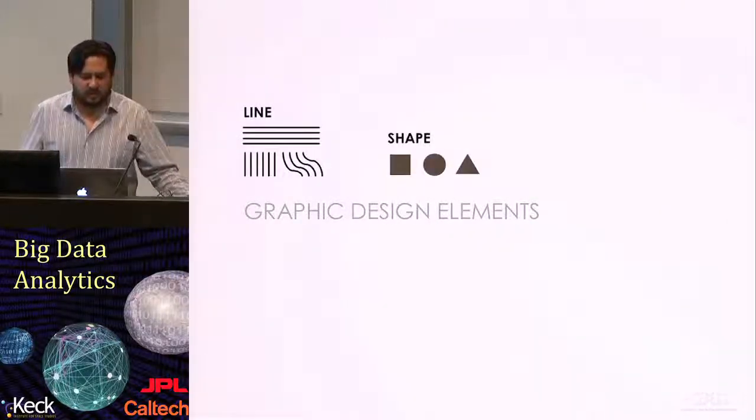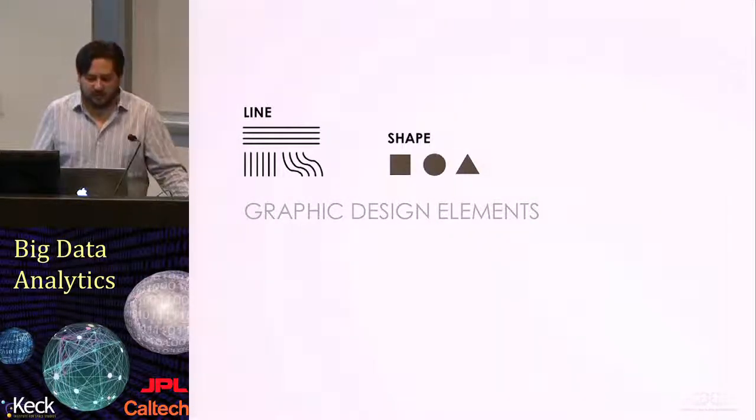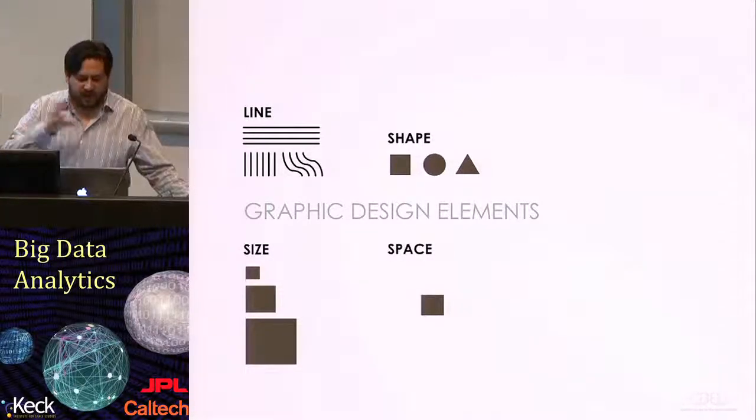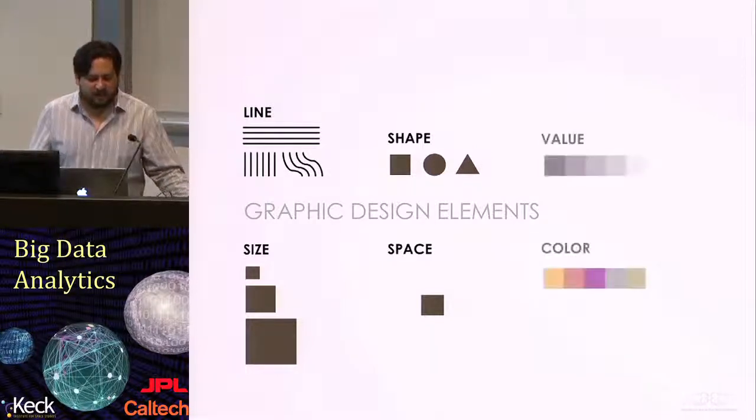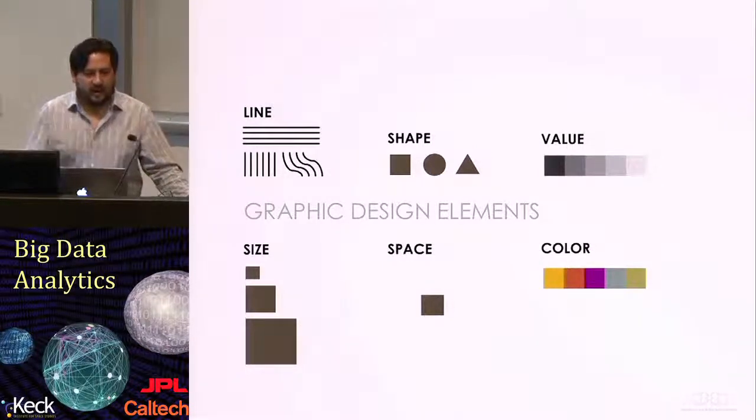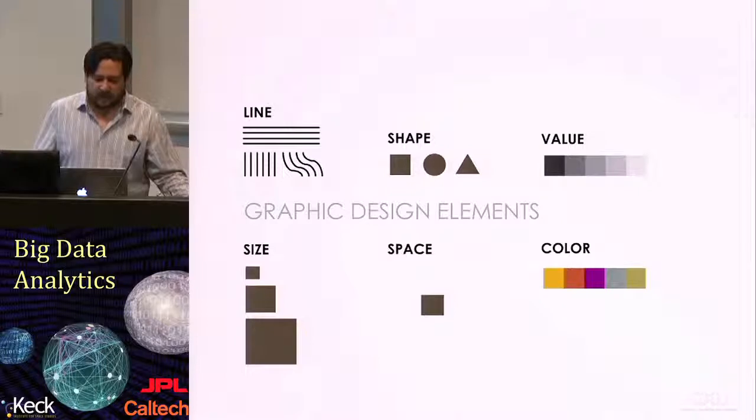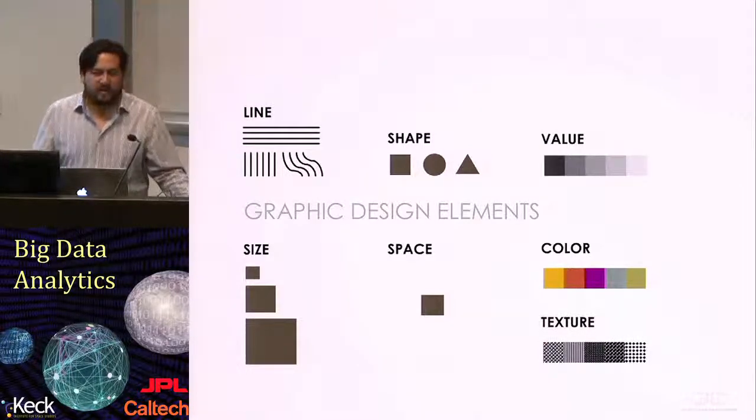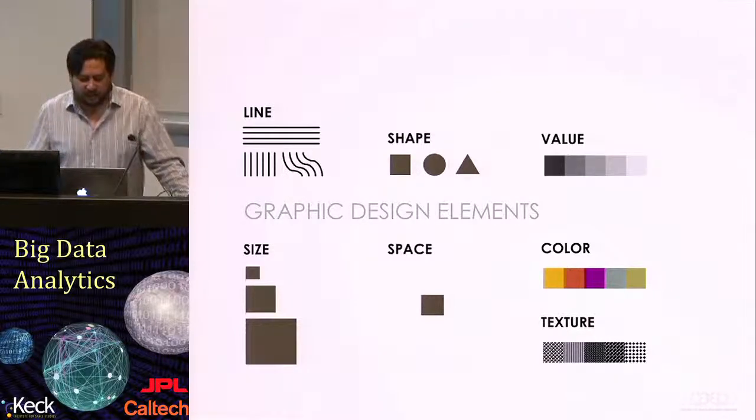So for that, let's talk a little bit about the different graphic design elements that we have available to us. The more clear ones is we have the use of lines, the use of shapes, but we also have the use of size. We can use the space around the element, and of course, you can use color and the value, how light or dark something is. We can combine even these things to actually create more complex elements like texture.